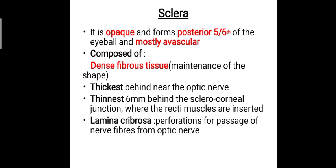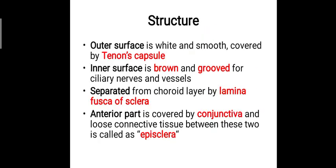There is another part called the lamina cribrosa — 'cribrosa' means perforated. Perforations are seen on the posterior part of the sclera for the passage of nerve fibers arising from the optic nerve. That area is called the lamina cribrosa.